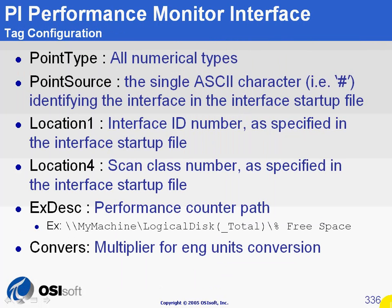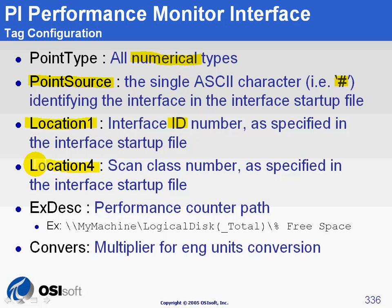Here is what you would see in Excel if you import the tag configuration. The point type is any numerical type — by default, Float32. The point source should correspond to what you chose in the interface; by default, the pound sign is the point source for the Performance Monitor Interface. Location 1 should correspond to the interface ID number as configured in ICU, and Location 4 should be set to one of the scan classes as defined in the interface.